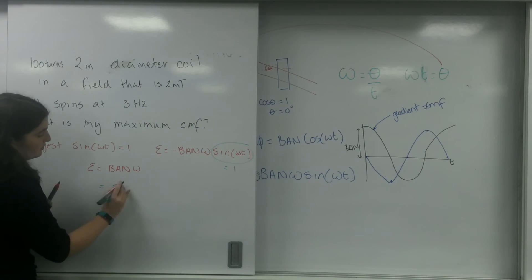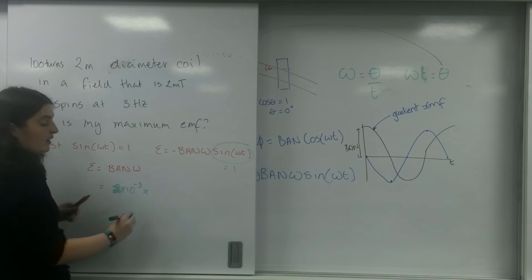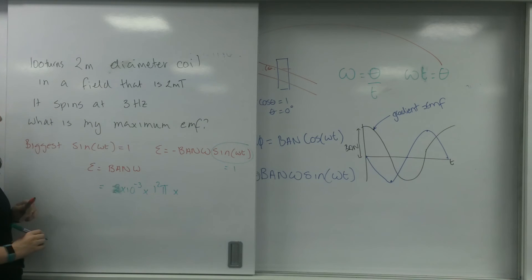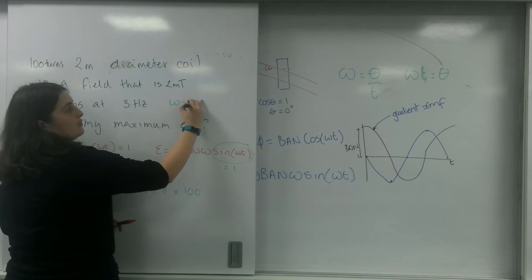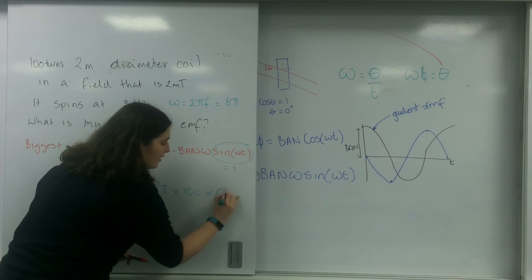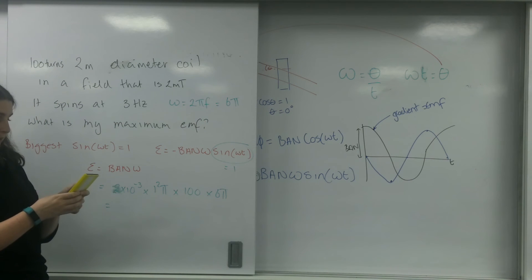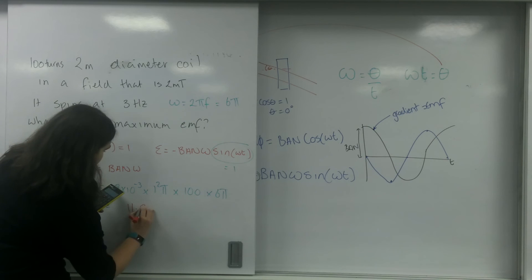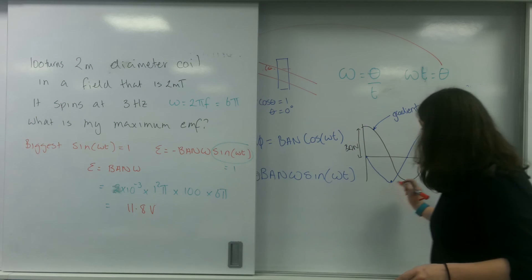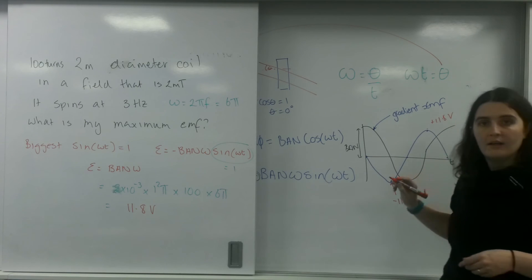So let's put some stuff in. B is 2 times 10 to the minus 3. My area, I've got a two-meter diameter coil, so it's pi r squared. So 1 squared pi times by number of turns, 100, times by omega. Now I know the frequency, and omega is 2 pi f. So 2 pi times by 3, 6 pi. Put that all into my calculator. I've got 2 times 10 to the minus 3 times by pi times by 100 times by 6 pi. And I get a maximum EMF made of 11.8 volts. Now that is going to be my maximum EMF made. So this one's going to be minus 11.8, this one here is going to be positive 11.8 volts.